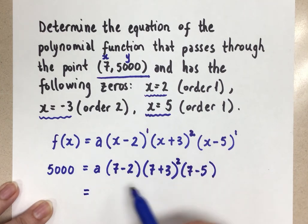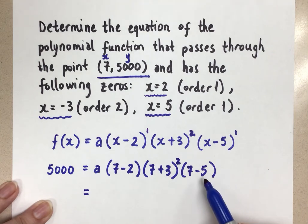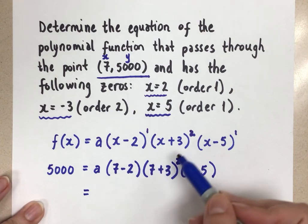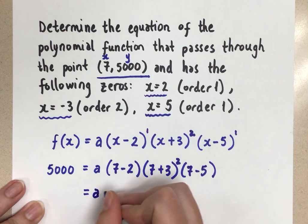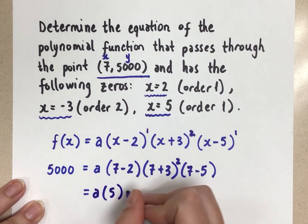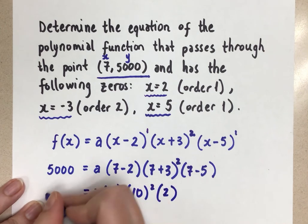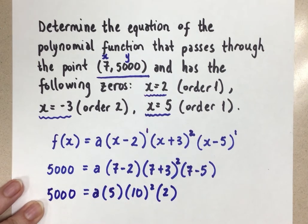All right. Now on the right side of my equation here, this is just a number. This is a number. This is a number. We should evaluate all these. Resist the urge to do all of your expanding here. That's not necessary. These are just numbers. So we have a 5 times 10 squared times 2. We still have this 5,000 on the left side.